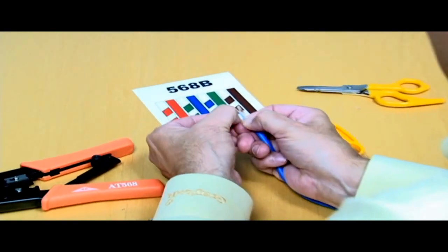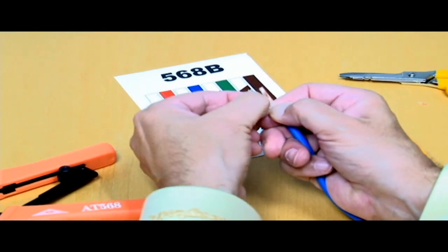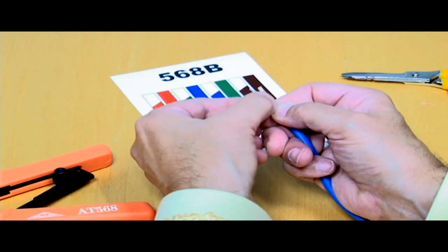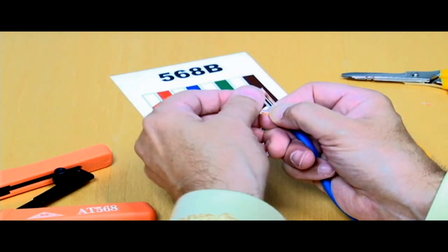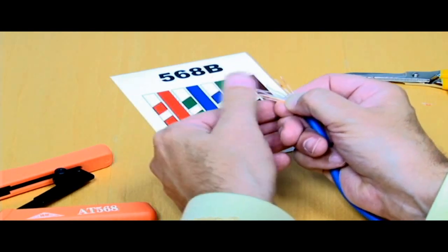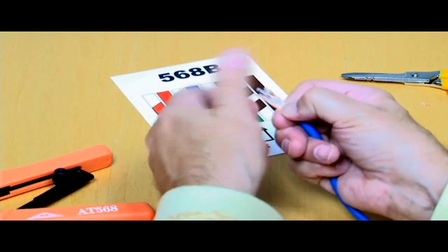And it's the white with the green stripe, and then the next one will be the solid blue. And then it's the white with the blue stripe, and then the solid green, and then the white with the brown stripe and the solid brown. So we got them all in the right order.